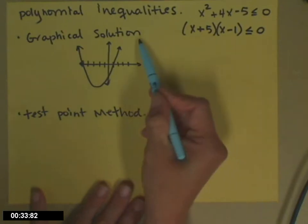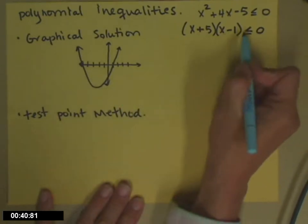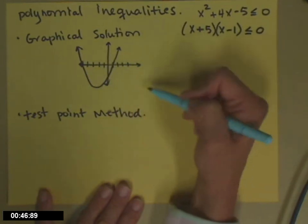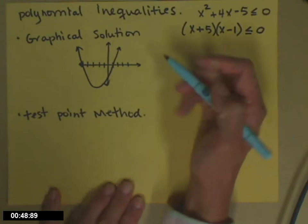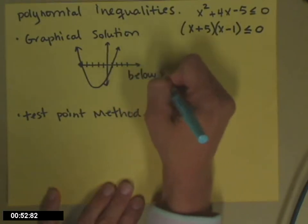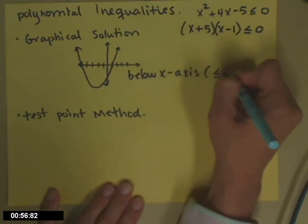A way that you can find it using a graph, especially if someone's giving you a graph like I have here, is you just have to look. Where is my graph less than or equal to zero? Where is it below the x-axis? And it's below the x-axis, that's the less than or equal to zero.